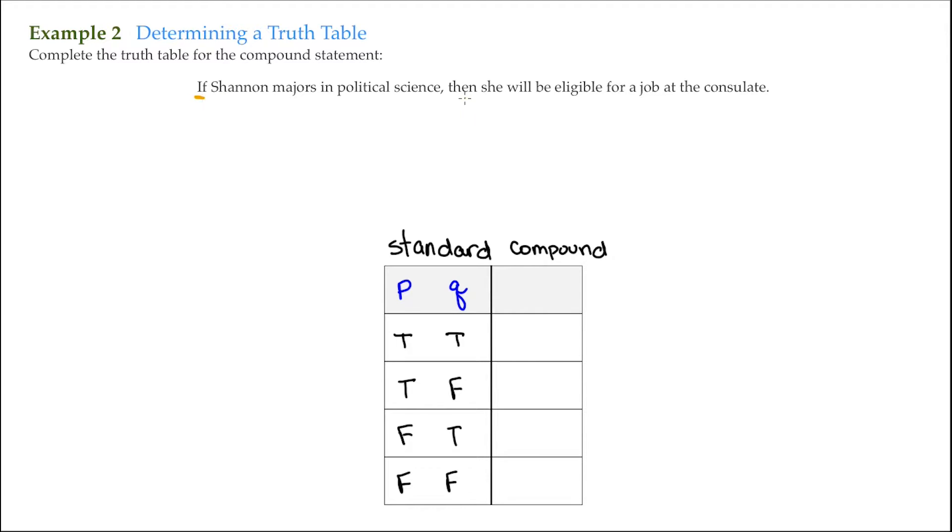We have an if and a then. So this is a conditional statement. So P can be Shannon majors in political science. And Q will be Shannon is eligible for a job at the consulate.